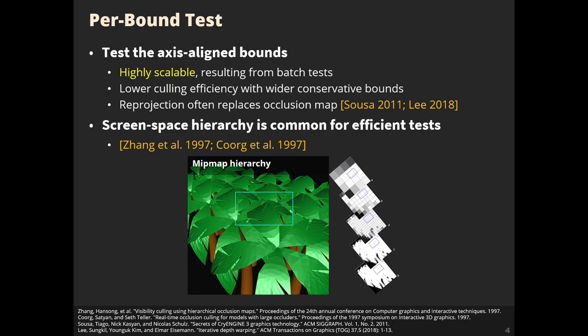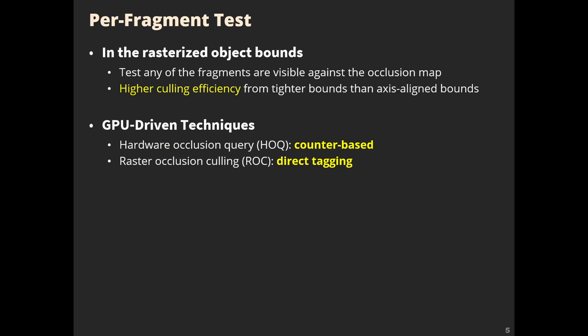It tests the axis-aligned bounds. It's highly scalable resulting from batch tests, but culling efficiency is low due to the wider conservative bounds. It performs culling with re-projection of the depth buffer generated in the previous frame for the occlusion map, and it commonly uses a screen-space hierarchy like mipmaps for efficient tests.